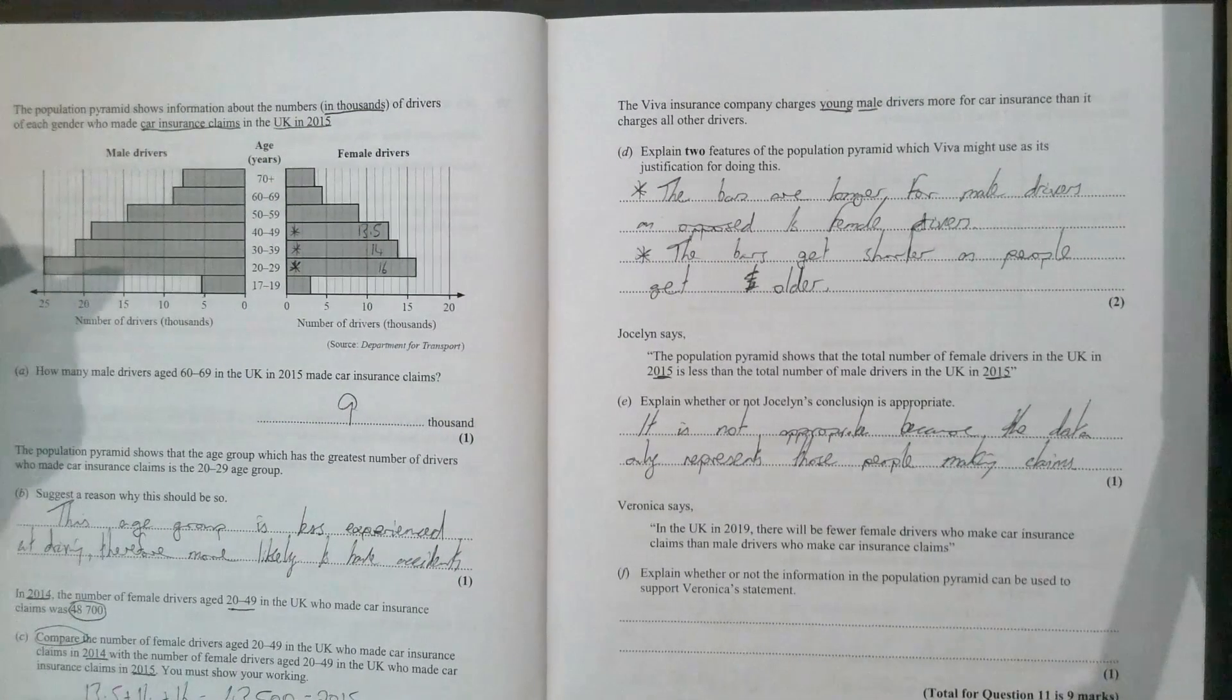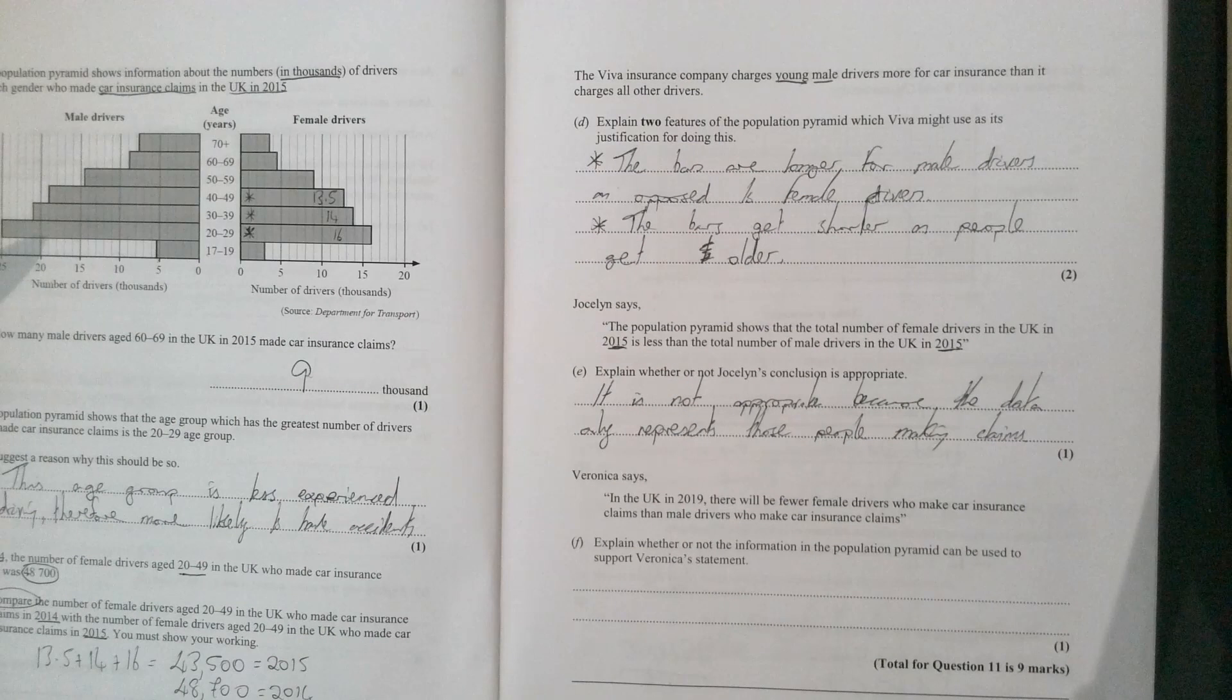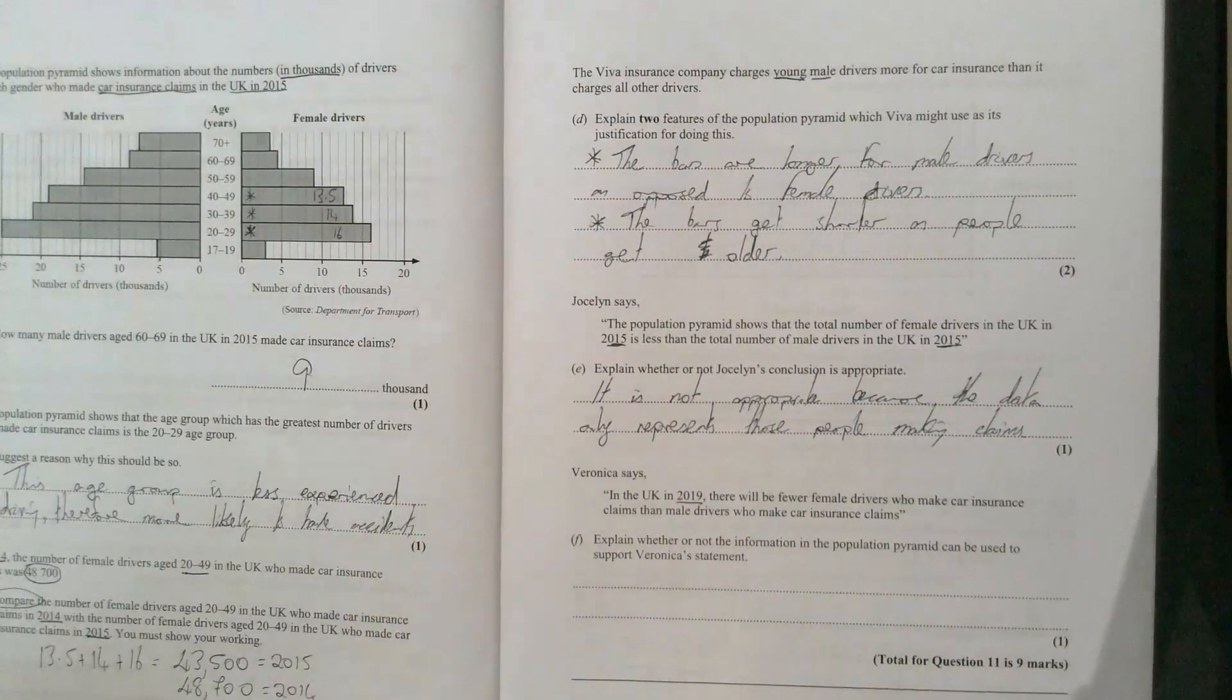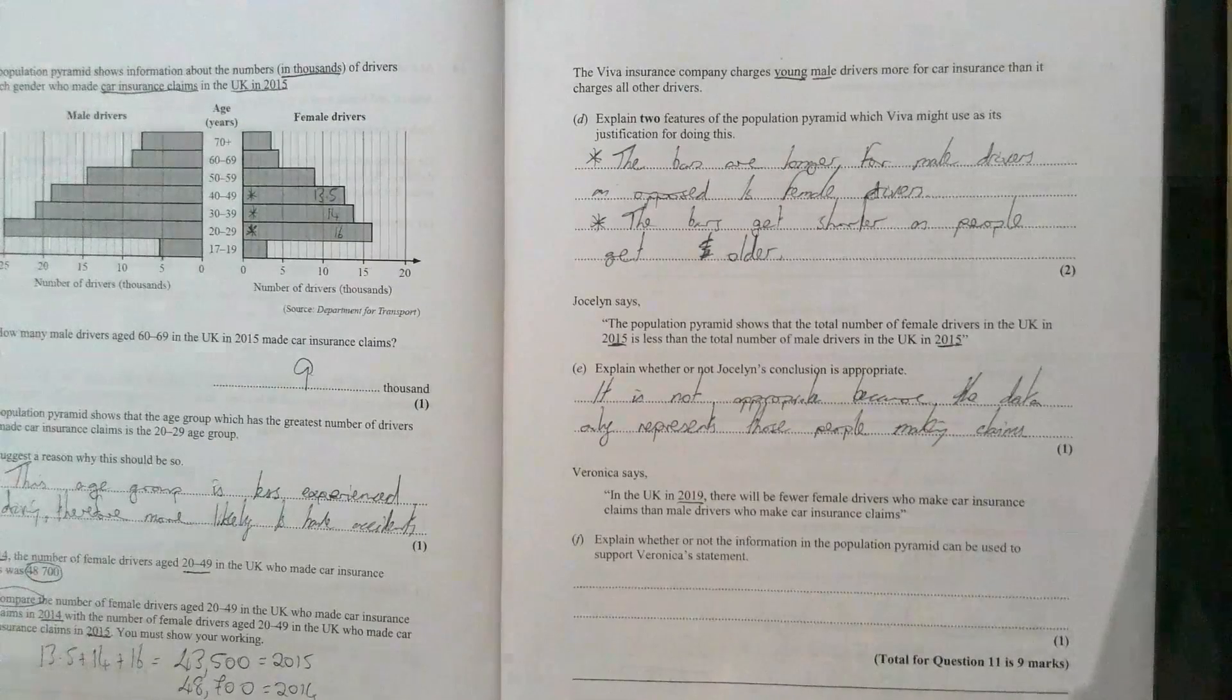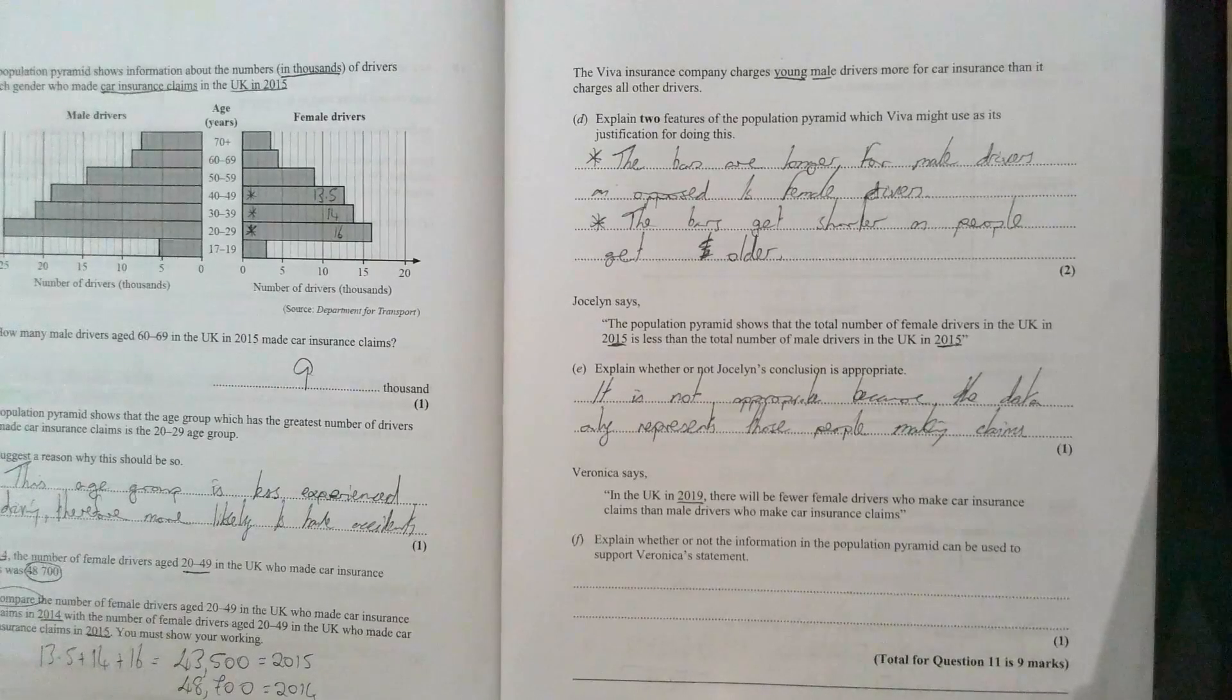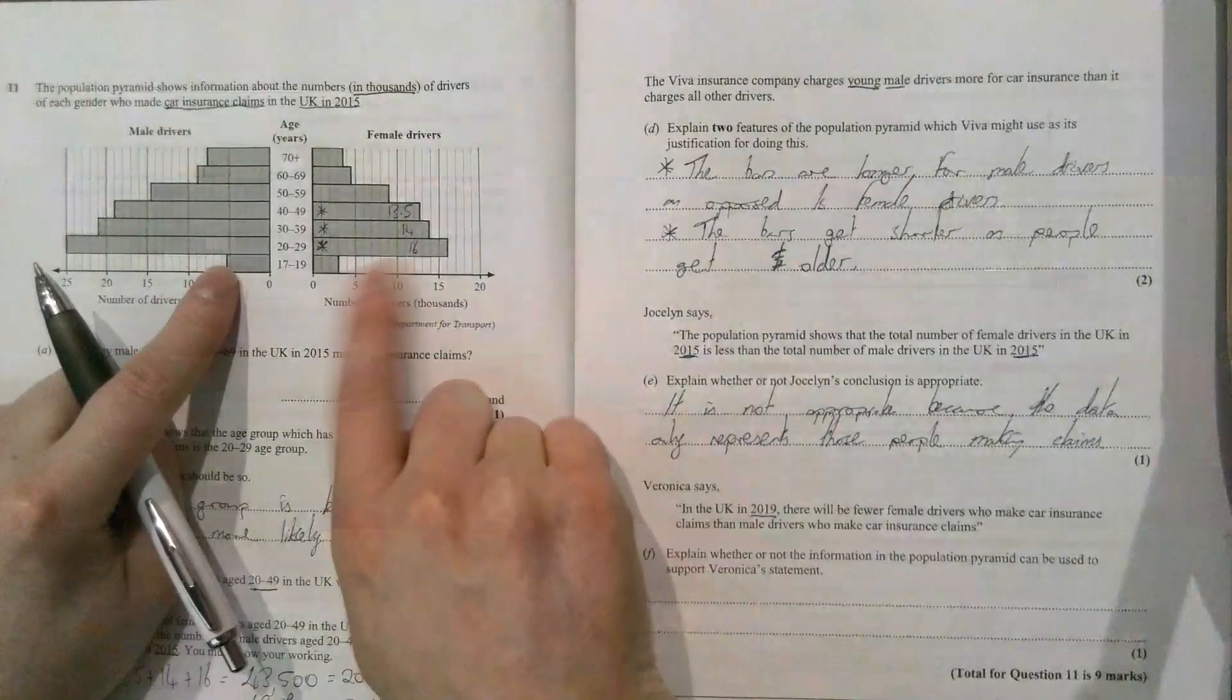Veronica says in the UK in 2019 there will be fewer female drivers who make car insurance claims than male drivers who make claims. Explain whether or not the information in the population pyramid can be used to support Veronica's statement. So she's saying that because in 2015 female drivers made a lot less claims, that will be the same in 2019. I would say this is incorrect.